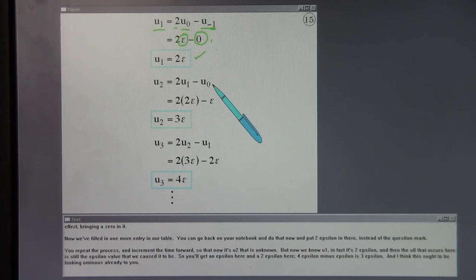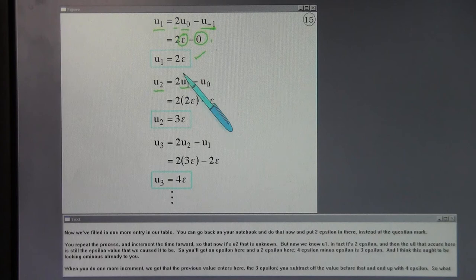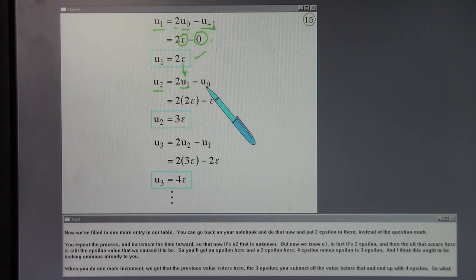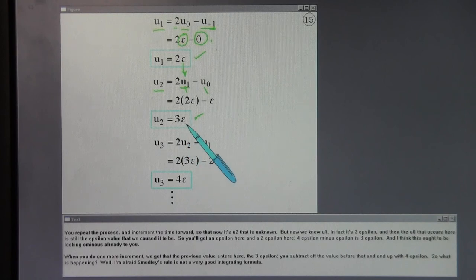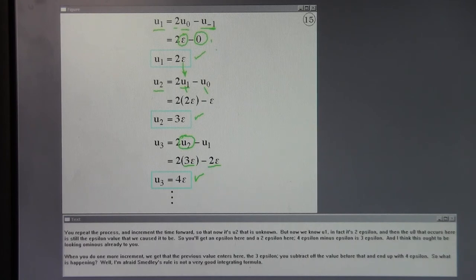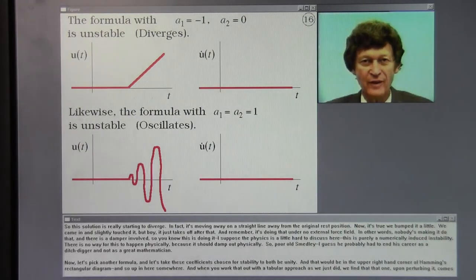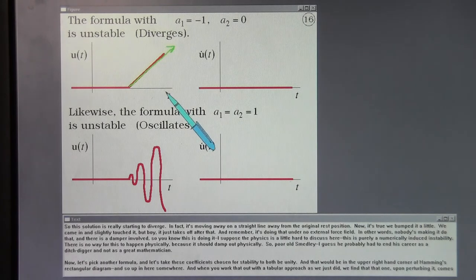But now we know U1. In fact, it's two epsilon. And then the U0 that occurs here is still the epsilon value that we caused it to be. So you get an epsilon here and a two epsilon here. Four epsilon minus epsilon is three epsilon. And I think this ought to be looking ominous already to you. When you do one more increment, you get that the previous value enters here, the three epsilon. You subtract off the value before that and you end up with four epsilon. So what is happening? Well, I'm afraid Smedley's rule was not a very good integrating formula. So this solution is really starting to diverge. In fact, it's moving away on a straight line away from the original rest position.